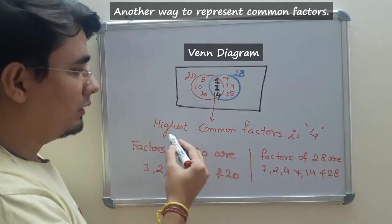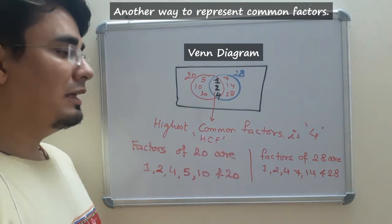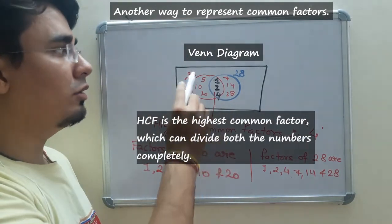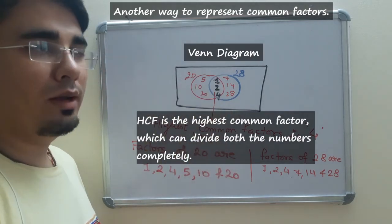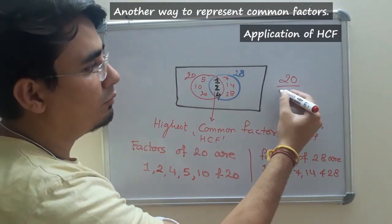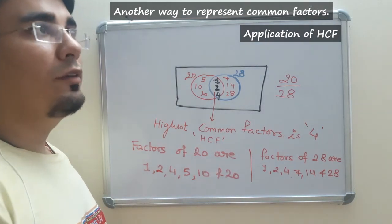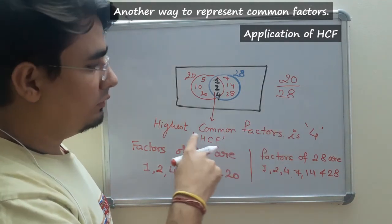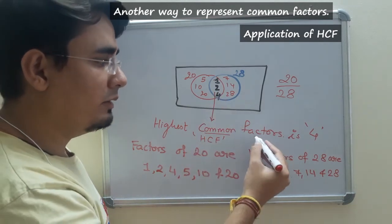What does it mean? It is nothing but HCF. So highest common factor is that number, highest number, highest number among all the factors of 20 and 28 which can divide both 20 and 28. Where does it help? Let me just give you one example.